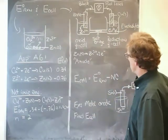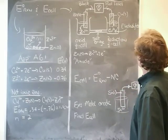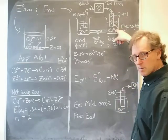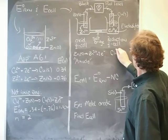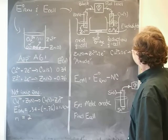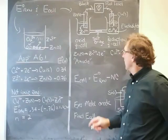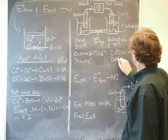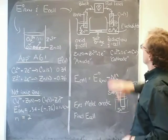The electrons are going to come down the wire and meet up with copper 2 plus in solution to make solid copper. So Cu²⁺ plus a couple of electrons make Cu solid. We have a special name for this half cell at which reduction takes place and it's called the cathode.